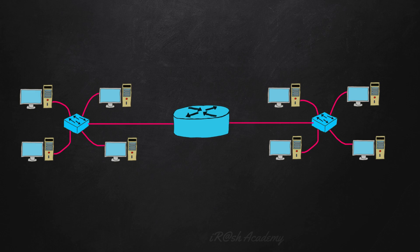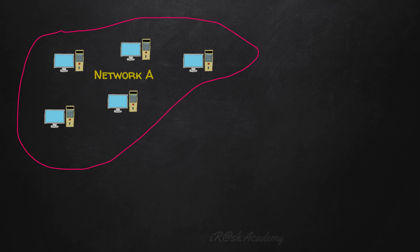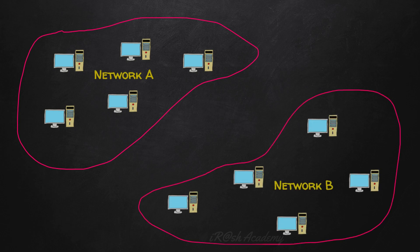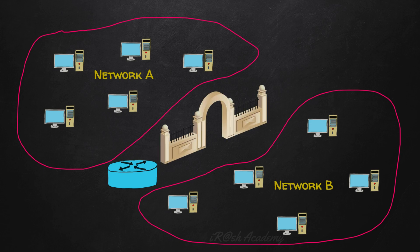If you want communication between two different networks, you need to connect a router in between them to route packets between the networks. The router is working as a gateway between different networks. For example, we have network A and network B, each containing multiple computers. All computers in network A can communicate together, and all computers in network B can communicate together. But computers from network A cannot communicate with computers in network B without a router. So we connect one router in between them, working as a gateway — the entry and exit point of the network.